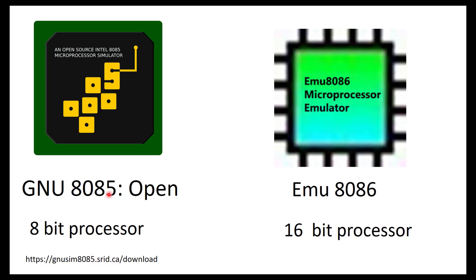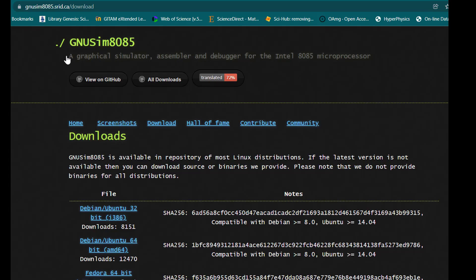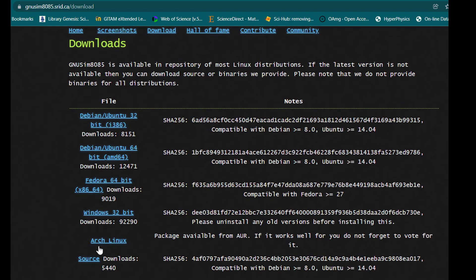The first one is GNU8085, which is open source software. The limitation is that you can only execute 8-bit instructions — you can use only 8-bit data. I'm going to show you the website where you can download this software. This is the GNUsim8085 simulator — it's clearly a simulator, assembler, and debugger for the Intel 8085 microprocessor. You can go to downloads and download the Windows version to start using it.